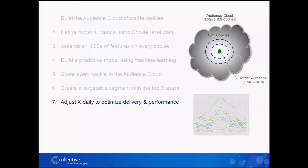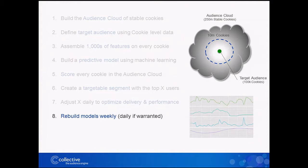We then score every single user in the cloud. We take a given advertiser's predictive model and rank everyone from least likely to most likely to do something, then pull just the top-end users depending on the campaign objectives and how much they want to deliver the next day. We can identify the five million users most likely to engage with an ad, or most likely to convert for an advertiser, and adjust that pool size daily to optimize delivery and performance. We rebuild these models every single week, and will even rebuild them daily if warranted.